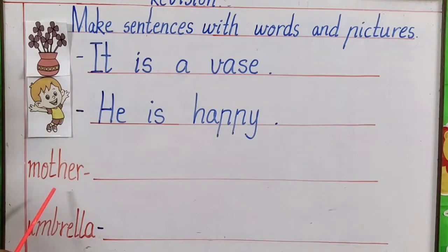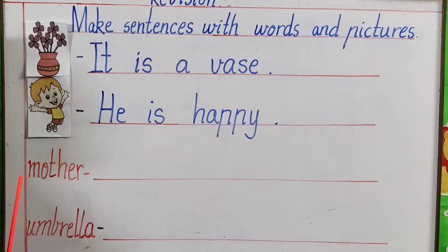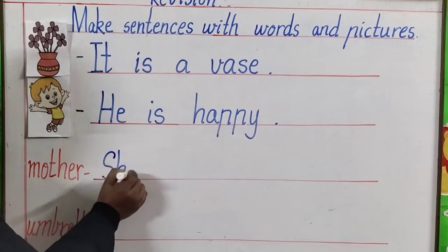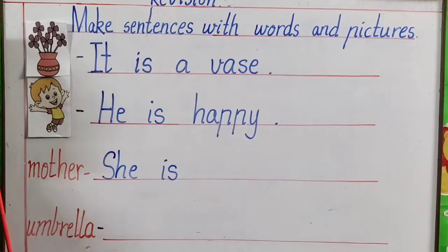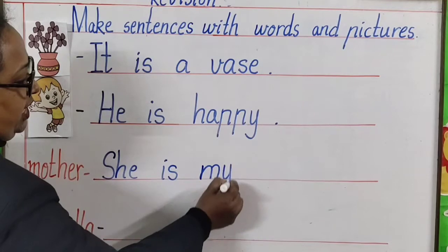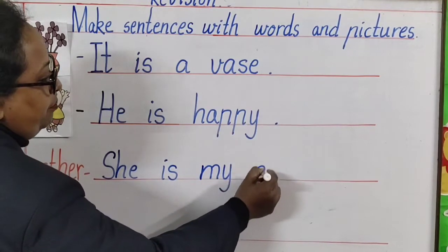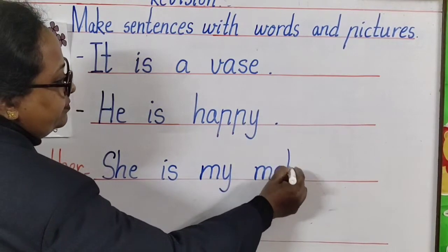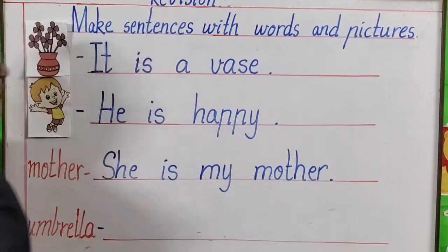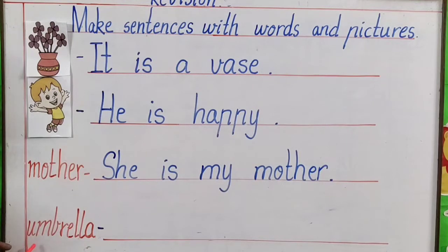Next, you can see two words. The first word is mother. Frame a nice sentence with mother. She is my mother. Very good. She is my mother.